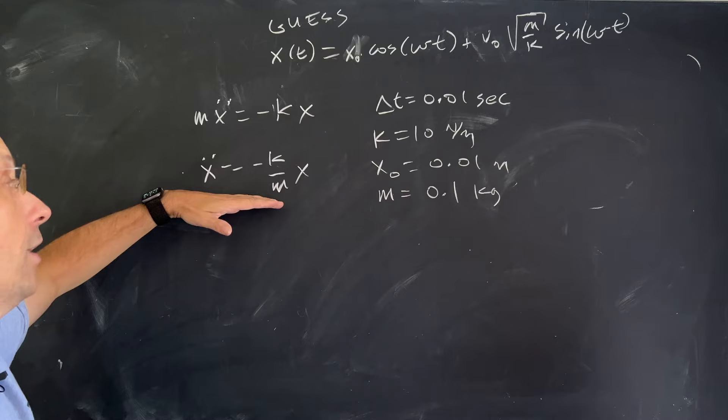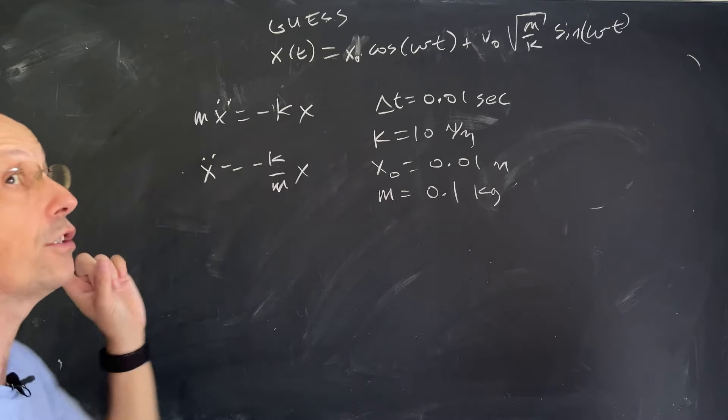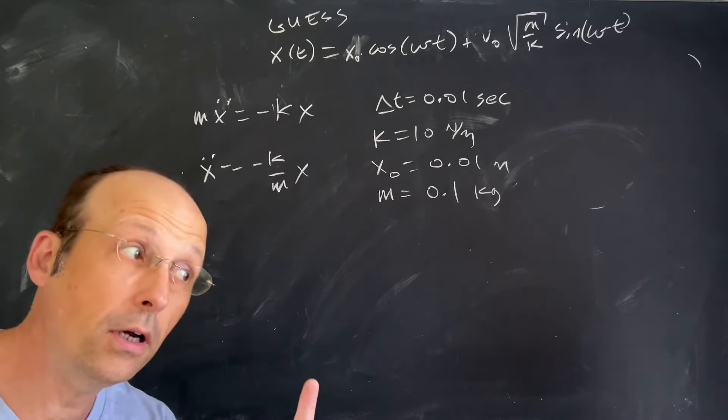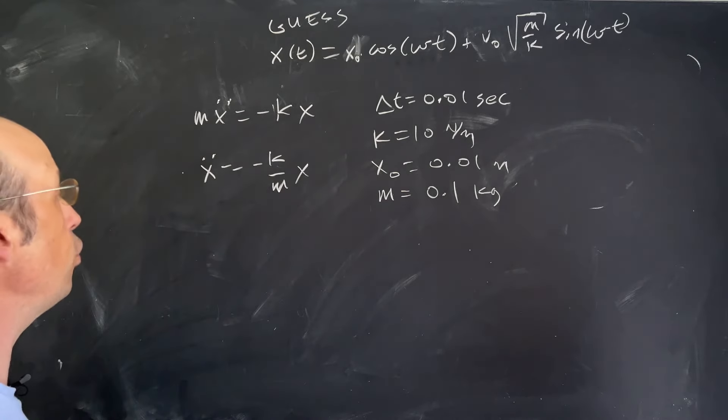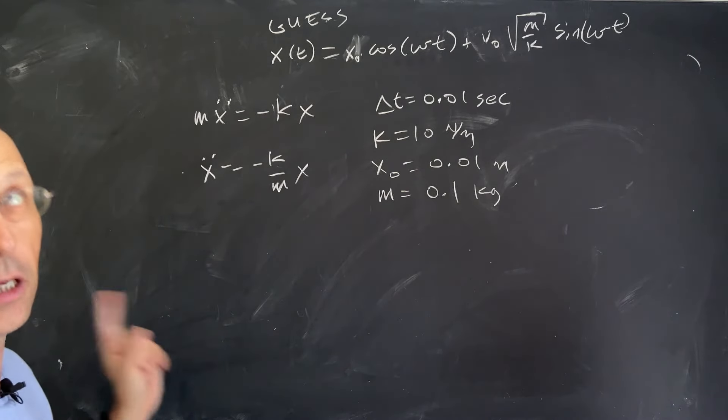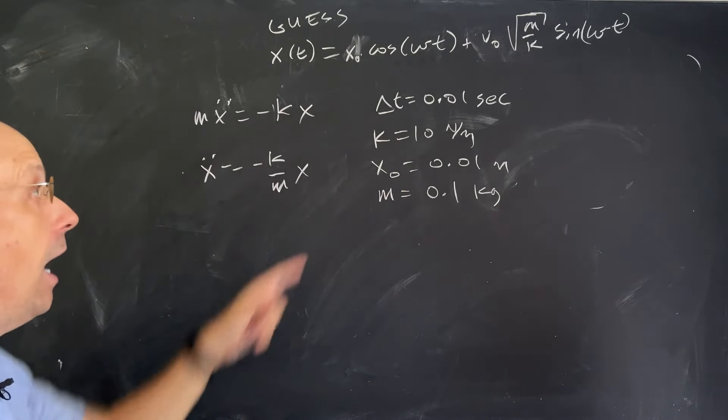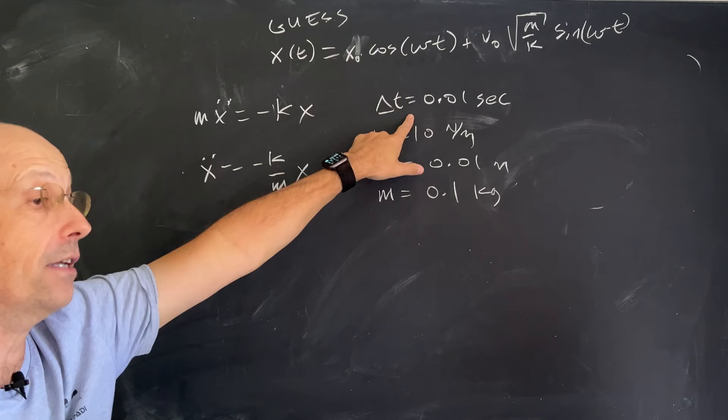Let's pick some values: k = 10 N/m, initial position x₀ = 0.01 m, and mass m = 0.1 kg.